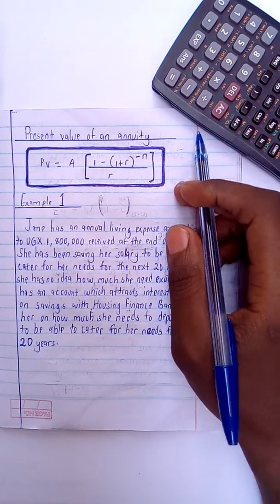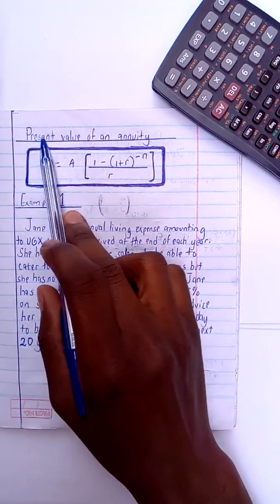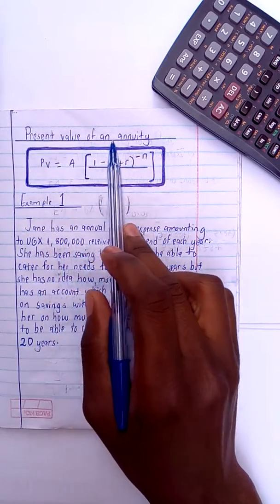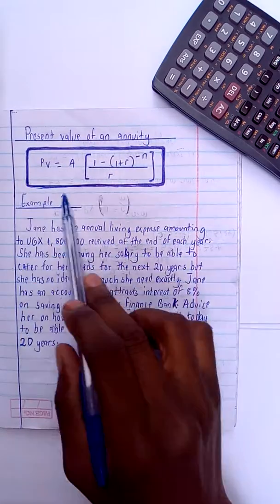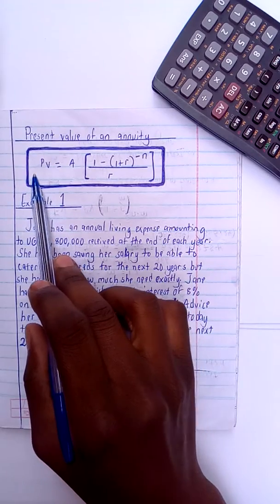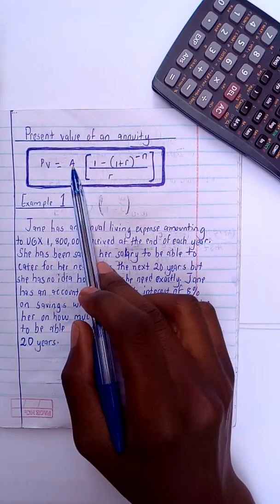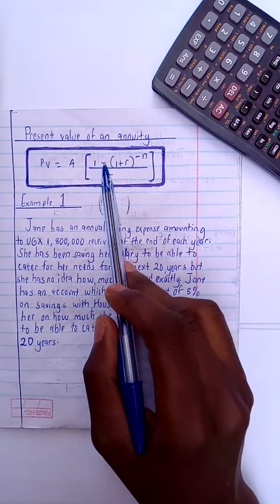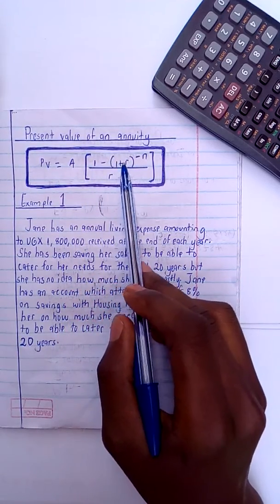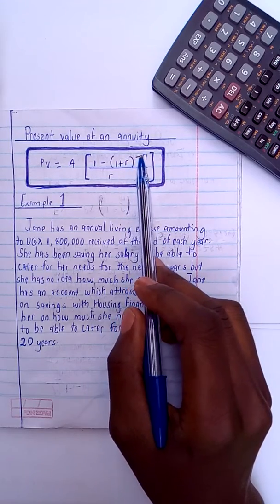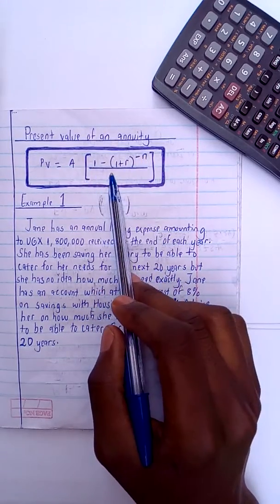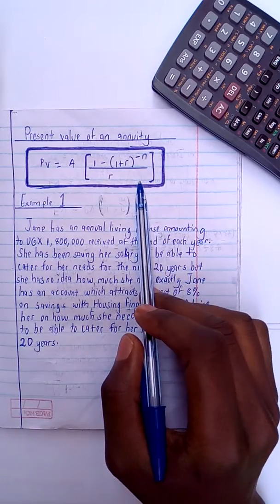So with the present value of an annuity, this is our formula in this rectangle. The present value is equal to the annual installment times square brackets: one minus bracket one plus r bracket to the power negative n, divided by r. You close off with the square brackets. This will be our formula.